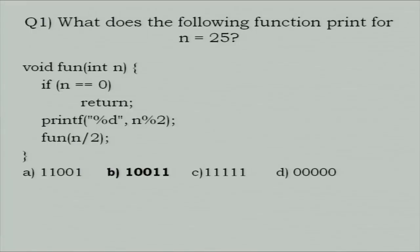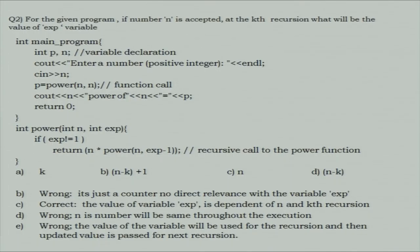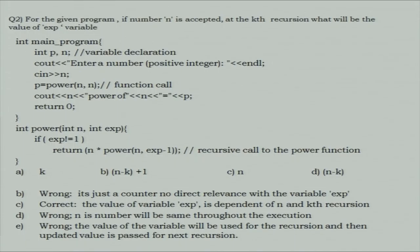The first quiz problem is tricky — it looks like it produces a binary number from a decimal input, as first-year students often solve conversion problems. But it actually gives the reverse binary number. That's why B is the right answer. The second quiz problem is a power function — a specialized one that computes square, cube, fourth power, etc. We test: after the kth iteration, how many times is procedure b called? C is the correct answer.